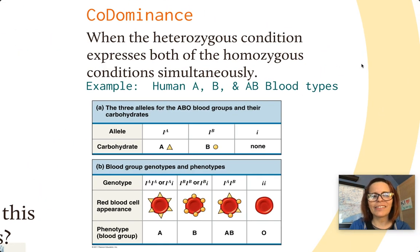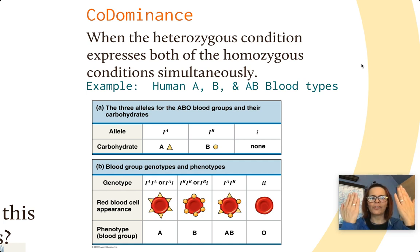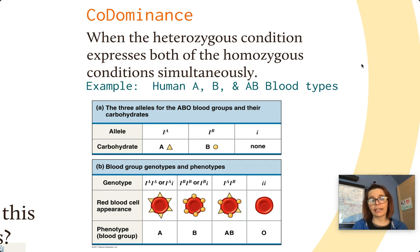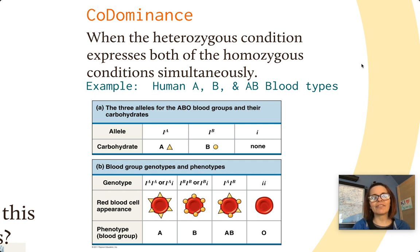The next one is called codominance. Codominance is similar to incomplete dominance in that you have two dominant traits, but this time, instead of blending, both dominant traits show up. A classic example of codominance occurs in blood types. Blood types are interesting because they show codominance and also multiple alleles, which we're going to talk about next. Humans can have type A, type B, type AB, or type O blood.